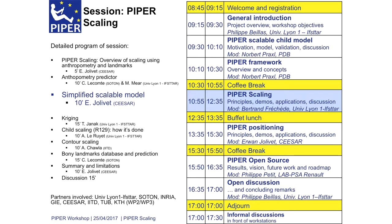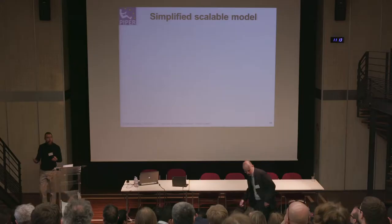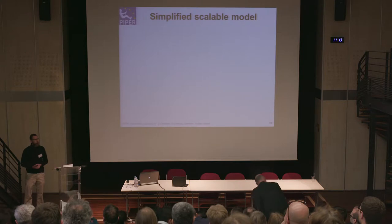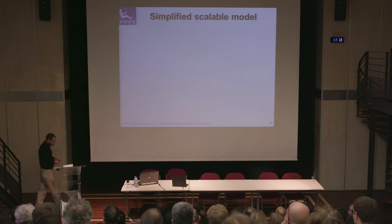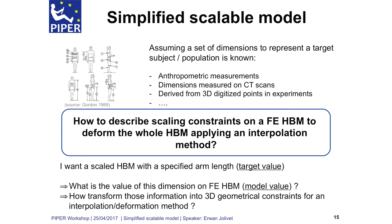We have seen how we can generate a full set of targets that describe the anthropometry of one subject from a predefined set by the user. But we still have some issues — we can have some data from experimental measurement, but we still have the same issue of how we can describe the scaling constraint on the human body model to be applied using a deformation method.